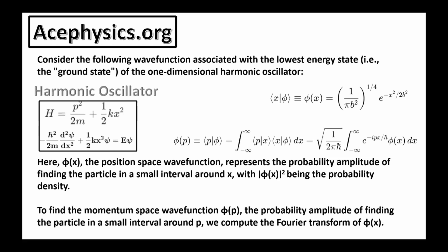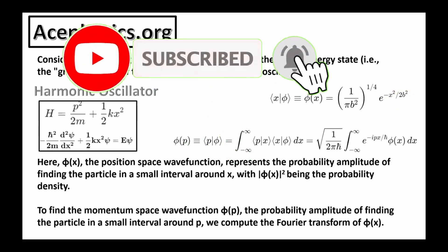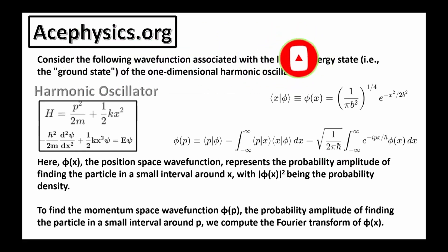Here's the problem setup. Consider the wave function associated with the lowest energy of the one-dimensional harmonic oscillator. This is the wave function written in the position basis. The position space wave function represents the probability amplitude of finding the particle in a small interval around x. The magnitude of phi of x squared is the probability density. You can always get phi of p using the Fourier transform. The parameter b relates to the system's characteristic length scale and measures how spread out the wave function is. Both phi of x and phi of p represent the same wave function, just expressed in different bases: position and momentum.